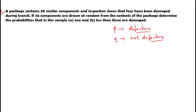In the question: a package of 50 similar components is inspected and 4 have been damaged during transit. If 6 components are drawn at random from the package, we have to determine P, Q, and n. The value of n will be 6, because we are drawing 6 components.